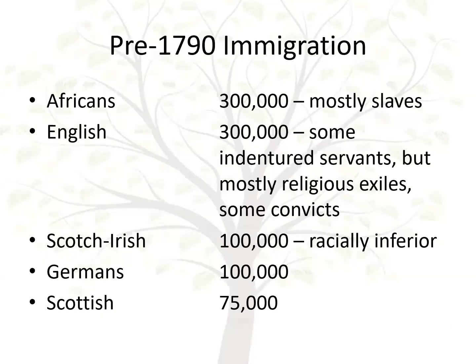What was driving naturalization policy was, in fact, the immigration going on. Pre-1790, about 300,000 Africans came in, mostly as slaves but also free blacks. English-speaking countries generated about 300,000, some indentured servants, mostly religious exiles, a few convicts. Scotch-Irish about 300,000, Germans about 100,000, Scottish 75,000. People were barred based on race, gender, servitude, and moral character. This doesn't include the population already in the U.S. or Native Americans, who were also denied citizenship.